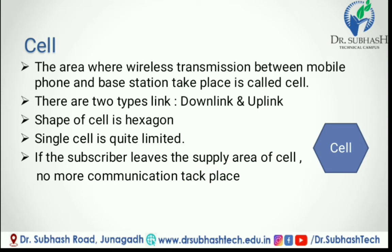Cell is the area where wireless transmission between mobile phone and base station takes place. Transmission of data occurs between mobile phone and base station. Mobile phone is responsible for users' data transmission and reception. A base station is capable of handling several calls of subscribers. There are two types of links: downlink and uplink. Transmission of user data from base station to mobile phone is called downlink; from mobile phone to base station is called uplink.